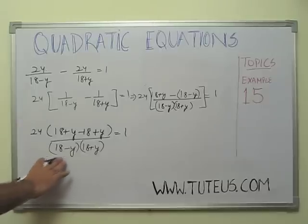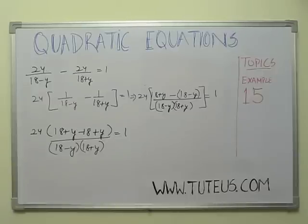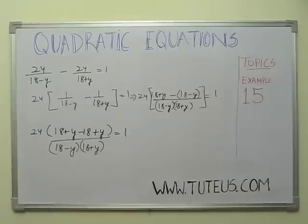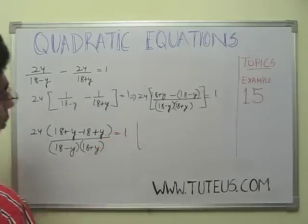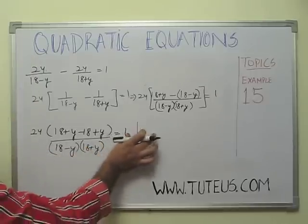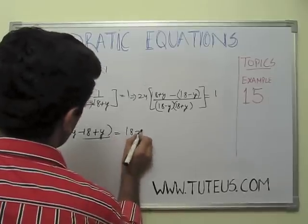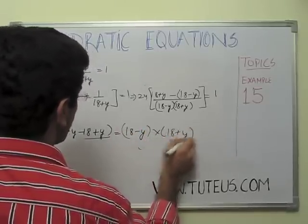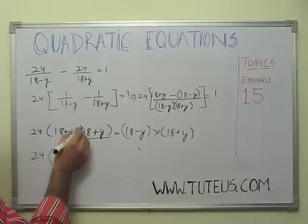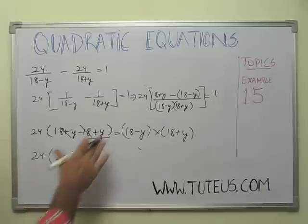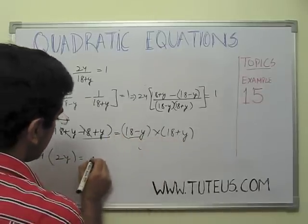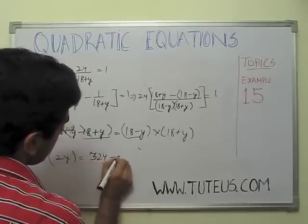Note that if y equals 18, then the upstream speed would be zero, which is not physically possible, so y cannot equal 18. The denominator (18 minus y)(18 plus y) is a minus b times a plus b, which equals a squared minus b squared, so it equals 18 squared minus y squared, which is 324 minus y squared.